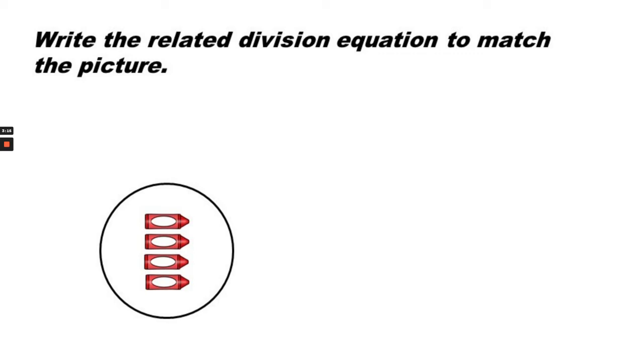This time we're going to write the related division equation to match the picture. Remember that in a division equation the second number is the number of groups. There's one group. The total number is the first number, so all the crayons you see. We see four crayons, one group. 4 divided by 1 equals 4.